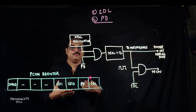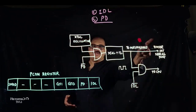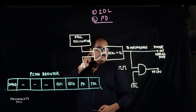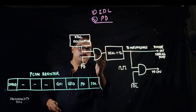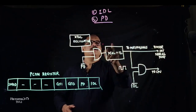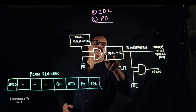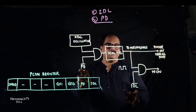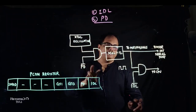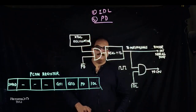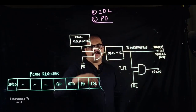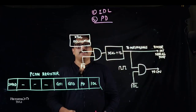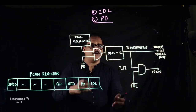As you know, the 8051 has a crystal oscillator. In this diagram, the crystal oscillator is shown, and the frequency given out by the crystal oscillator is then further divided by 12. Now you can see two signals here: a power down bar signal (PD bar) and an idle bar signal. This AND gate has one input from the crystal oscillator and another input from the power down bit.